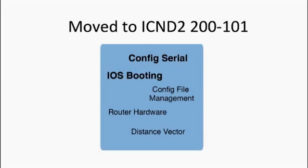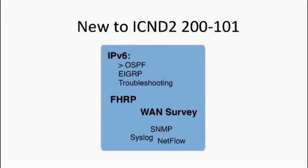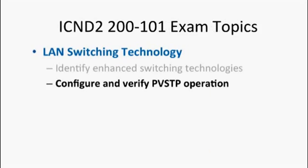Pretty much as much WAN stuff as they could move got moved over to ICND2 as well. So the configuration on serial links, which is a very small topic, got moved over. And a few totally new things: a little bit more on IPv6, a little bit more about WANs, and three network management topics at the bottom of that graphic. And to me, a very interesting topic to have at CCNA level: first hop redundancy protocols. That's traditionally been a CCNP level topic.